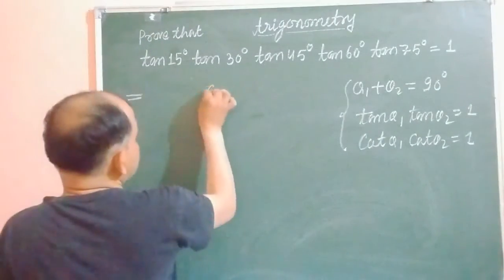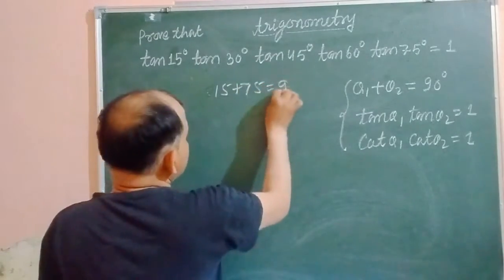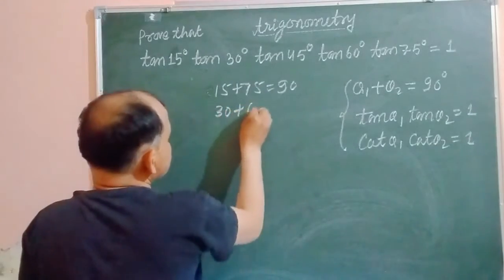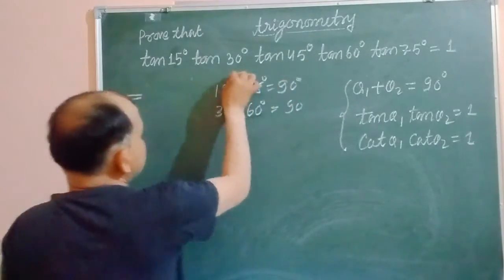15 plus 75 is 90, and here 30 and 60. 30 plus 60 is also 90.